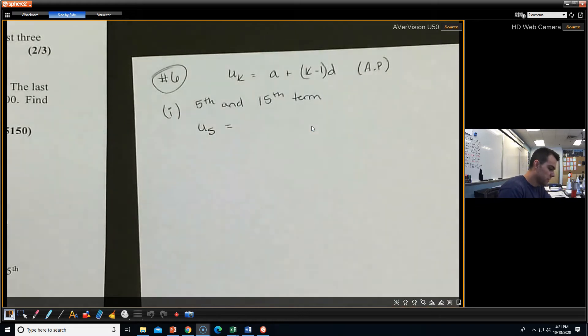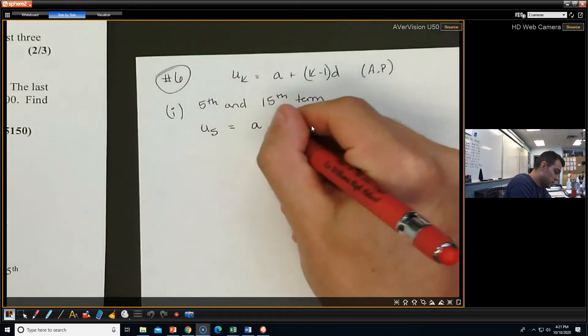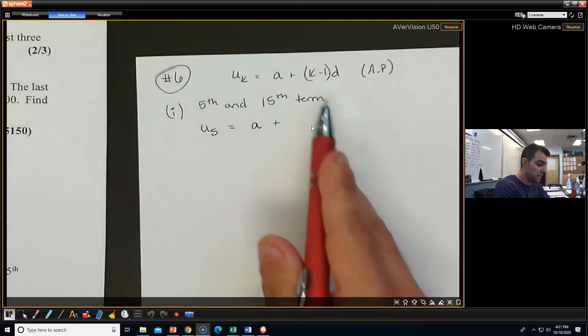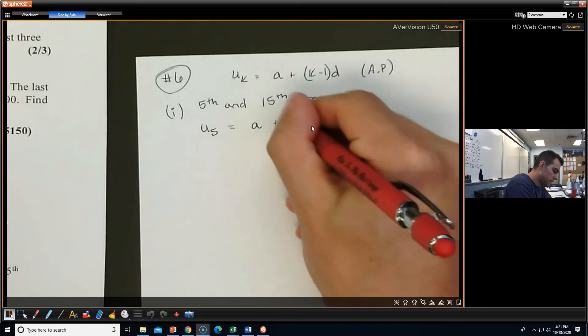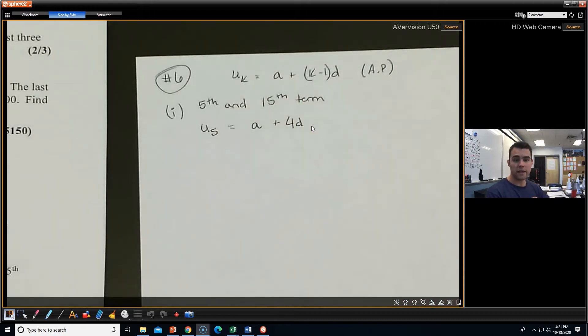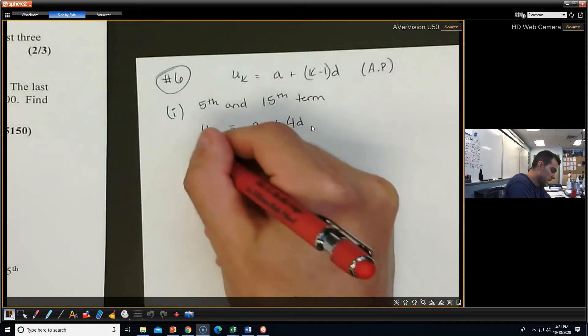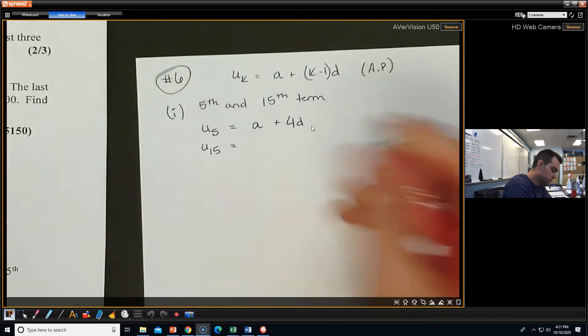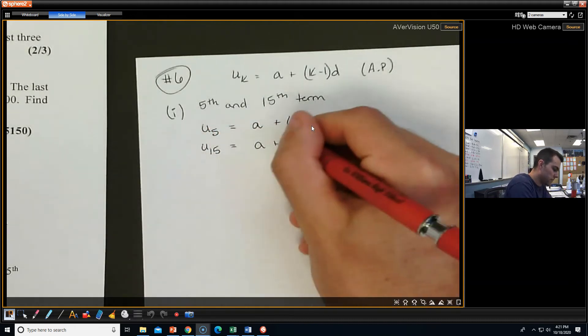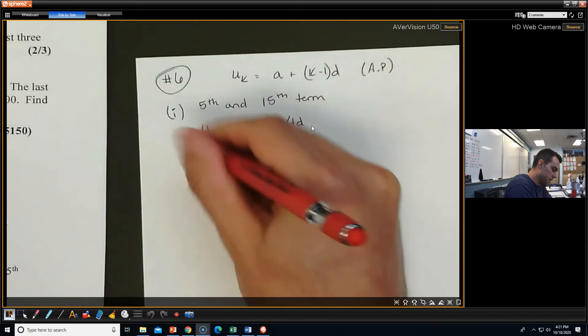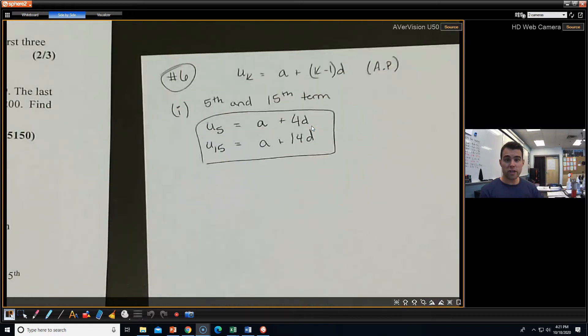U sub 5 equals, again, it's in terms of A and D, and I don't know what those are, but I do know what my K is. My K is 5, so 5 minus 1 is 4D, and there's my 5th term right there. And we can do the same thing with the 15th. I can do A plus 14D, and there we go. Not too shabby, right?